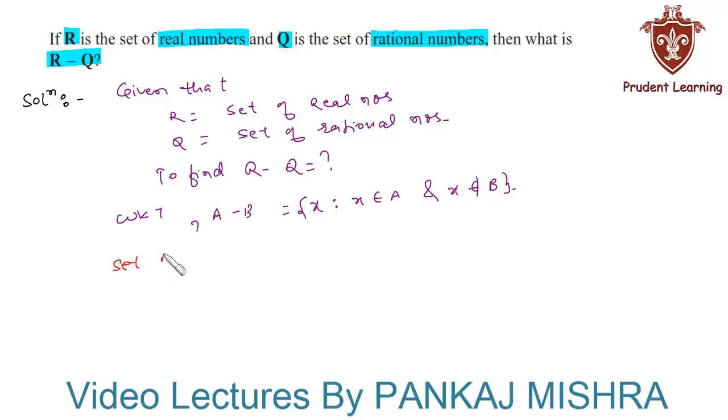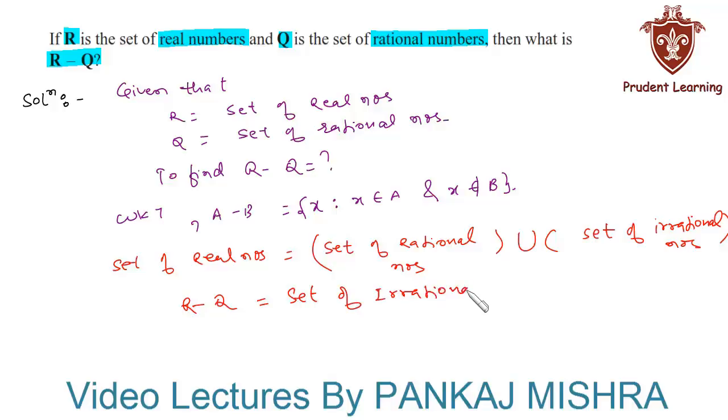Set of rational numbers union set of irrational numbers. Now we can clearly say that R minus Q, that is, set of real numbers minus set of rational numbers, is nothing but the set of irrational numbers.